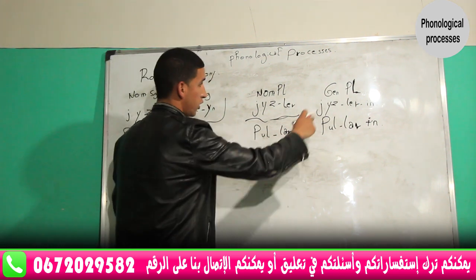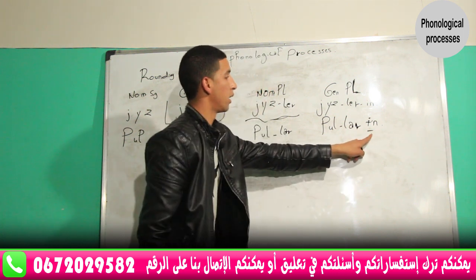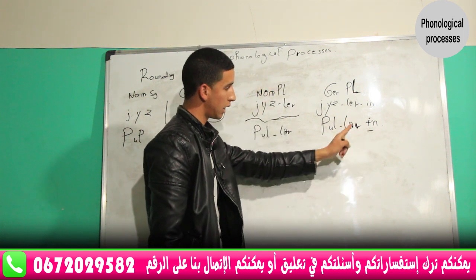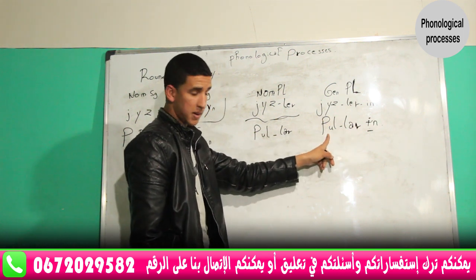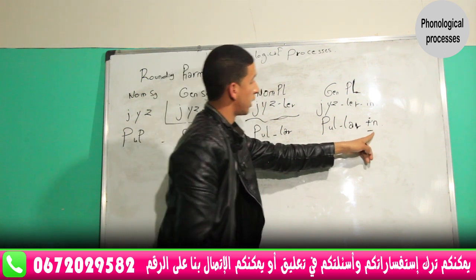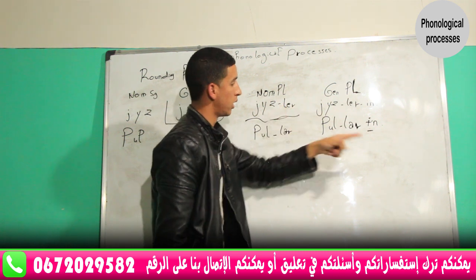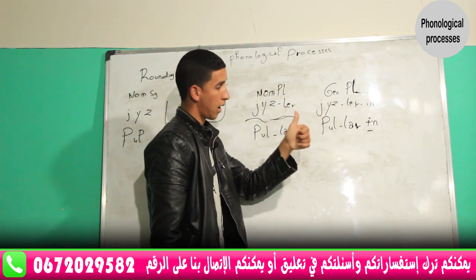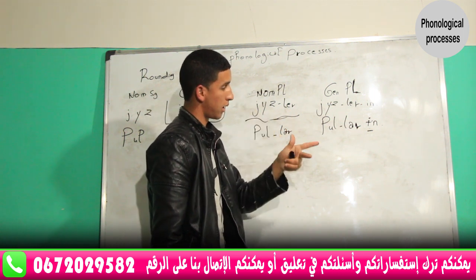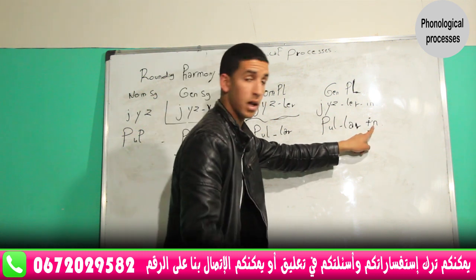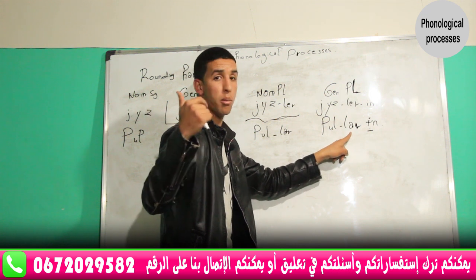In genitive plural, this vowel agrees in rounding with the suffix vowel and not with the stem vowel. Here, the stem vowel is high, front, and round. The suffix vowel is high, back, and round. And the genitive plural vowel is low, back, and round.